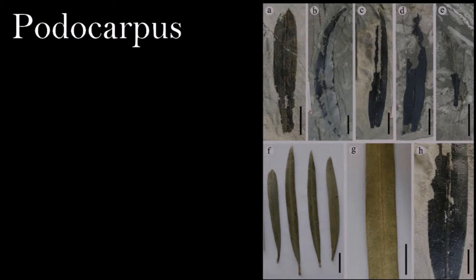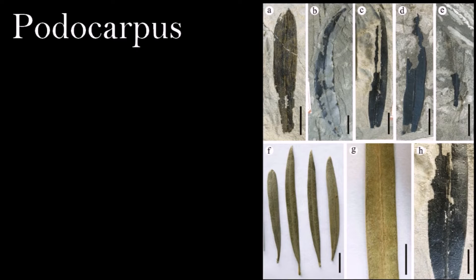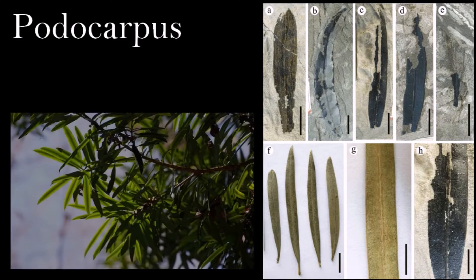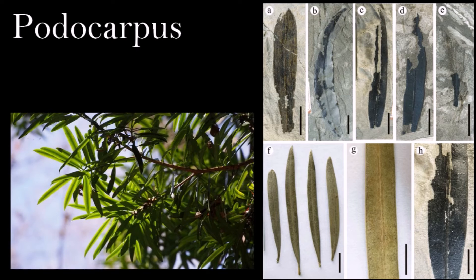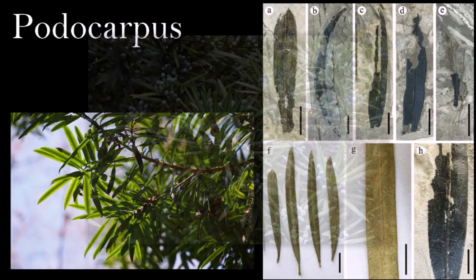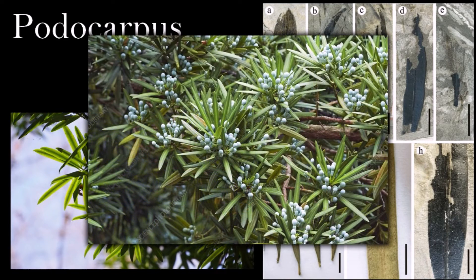These conifers have needle-shaped leaves that are flattened into one plane. Individual leaves are narrowed at the base and have rounded tips. Fossil Podocarpus can be distinguished from the similar shoots of Taxodium, Taxites, and Sequoia by anatomical details of their leaf surfaces. There are reports of Podocarpus pollen grains from the Cretaceous of North America, but by the Paleogene, the genus was restricted to the Mississippi Basin area.